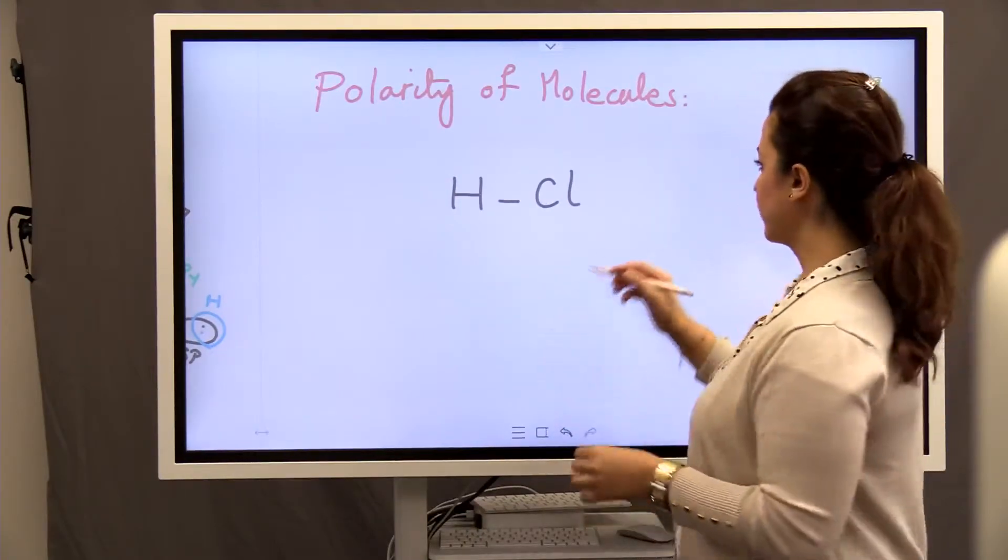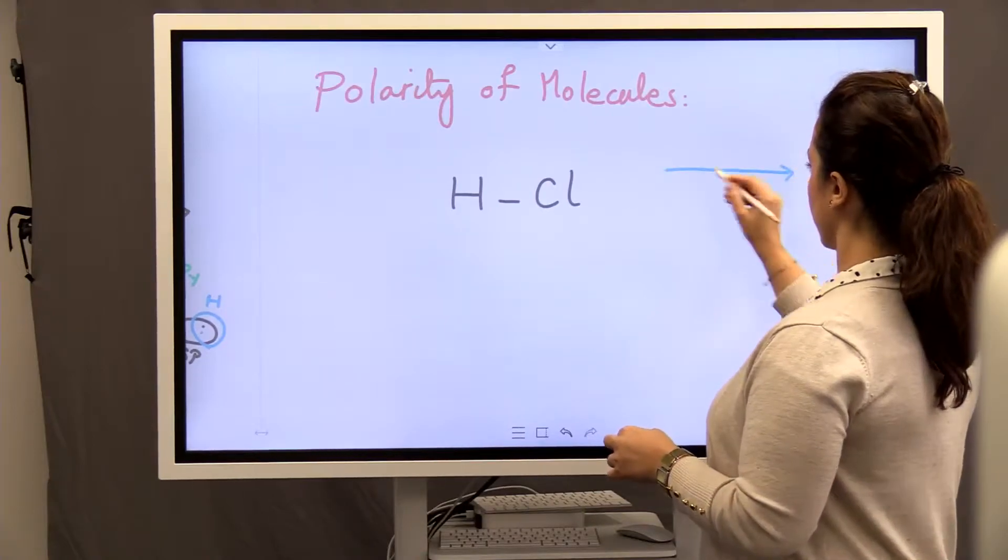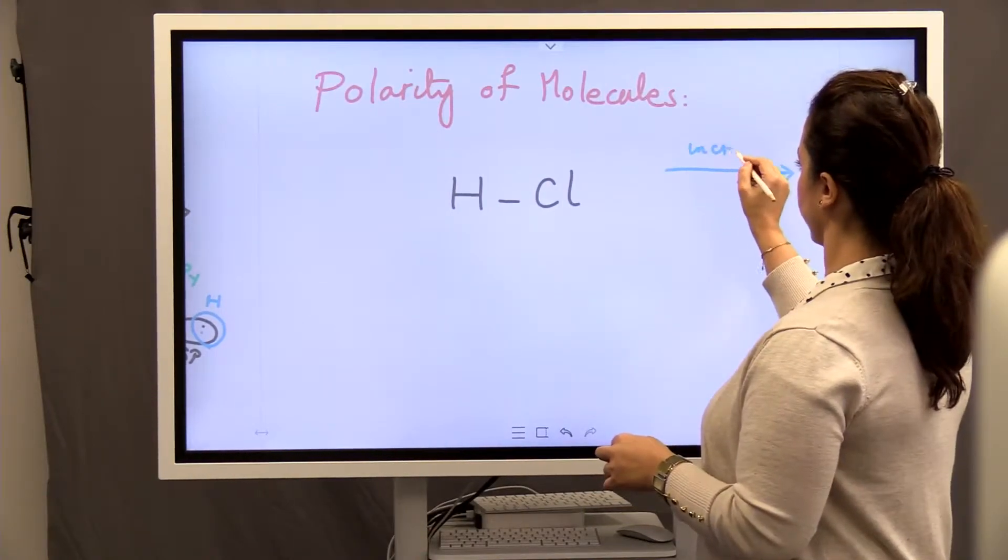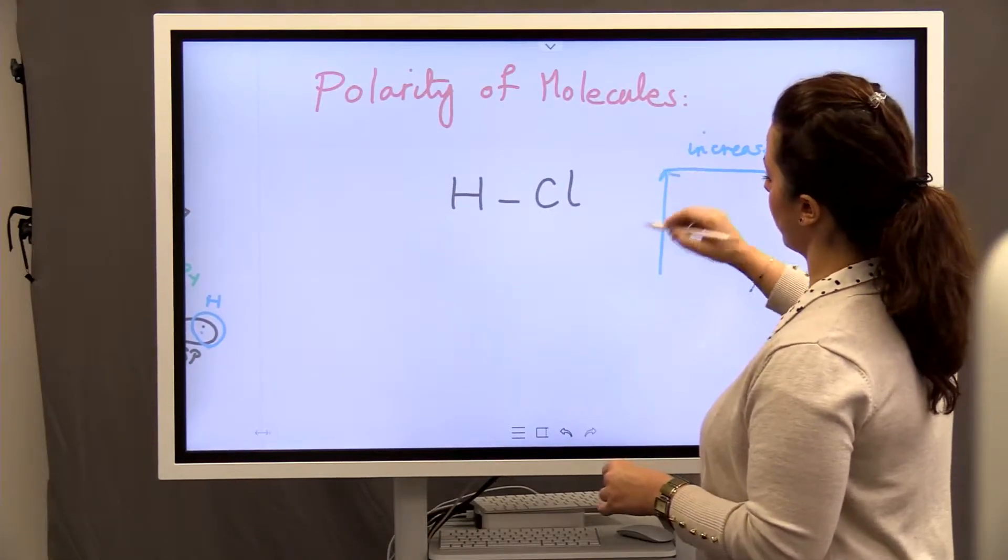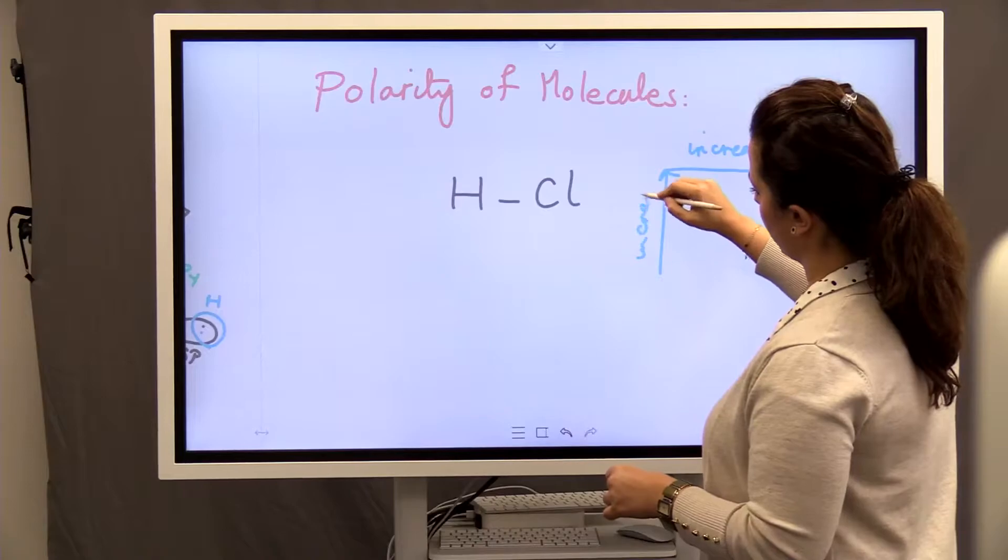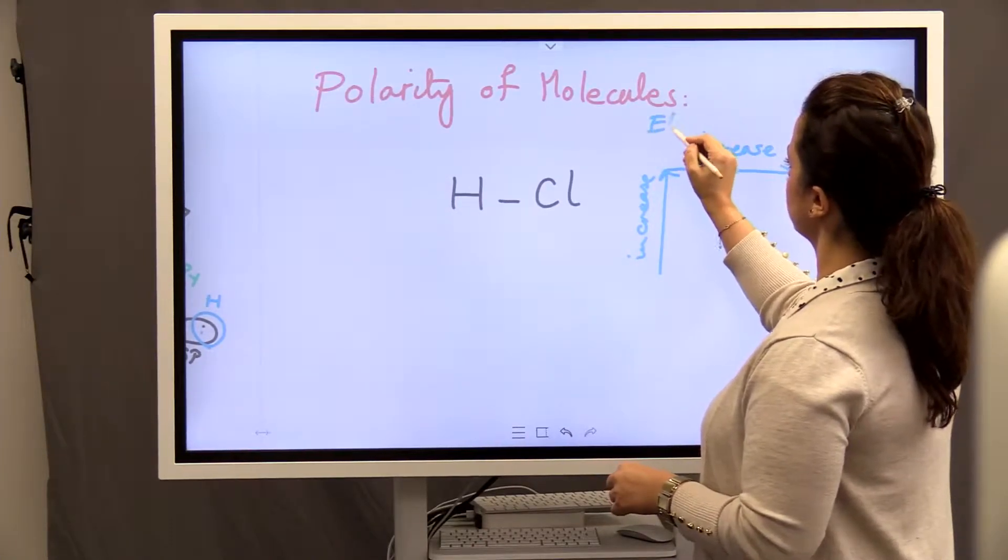So if you remember, the trend for electronegativity was increase from left to right across the period, and also increase from bottom to top. This was electronegativity trend.